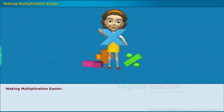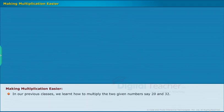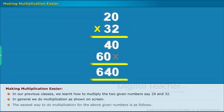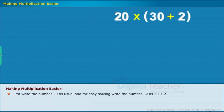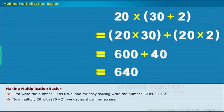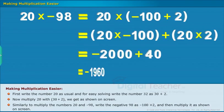Here we discuss multiplication of two or more numbers in an easier way. We learned how to multiply two numbers, say 20 and 32. The easiest way is to write 20 as usual and rewrite 32 as 30 plus 2, then multiply 20 with 30 plus 2, as shown on screen. Similarly, to multiply 20 and minus 98, write minus 98 as minus 100 plus 2 and then multiply as shown on screen.